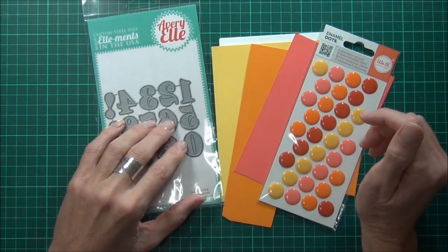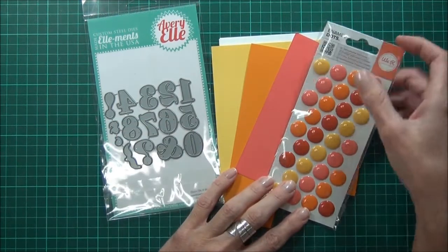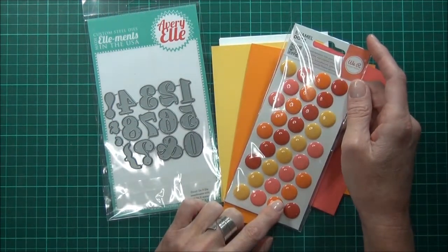Hi, it's Therese from Lost in Paper. I'm back with a card for Scrapbook Boutique. I'm going to use these wonderful enamel dots from We Are Memory Keepers.